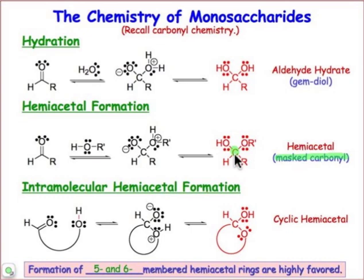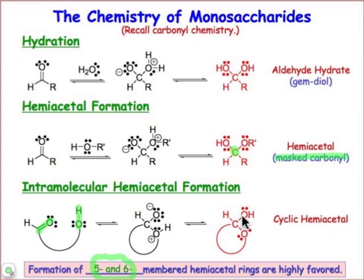The reason that hemiacetals are so common with carbohydrates is because, remember, they're polyhydroxylated ketones and aldehydes. That means in the same molecule, tethered to the carbonyl group, we have an alcohol that's present. And if we can form five or six-membered rings, we can intramolecularly add the elements of that hydroxyl group across the carbon-oxygen double bond.